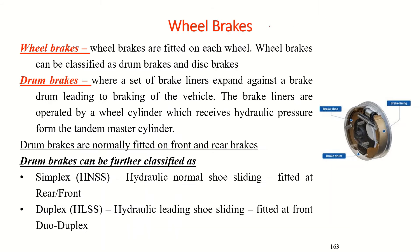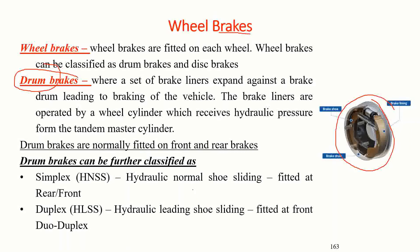On each wheel there is one brake. Brakes can be either drum brakes or disc brakes. This is a picture of a drum brake. There are different designs available — simplex, duplex — which I will explain next.